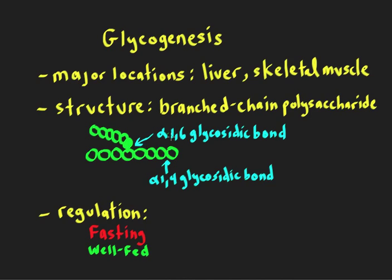The linkages of the glucoses come in two flavors. The glucoses can be linked through an alpha-1,4 glycosidic bond, and the branch points have an alpha-1,6 glycosidic bond. Depending on what kind of enzymes we have, we'll be able to take advantage of these bonds and either break or form them during glycogen metabolism. These are the two main flavors of glycogen linkages.